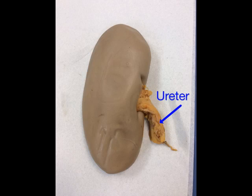And finally, the last structure located at the hilum is the ureter. The ureter transports urine from the kidney to the urinary bladder.